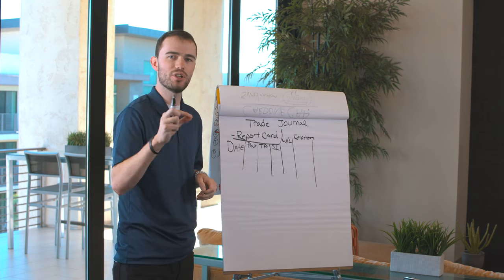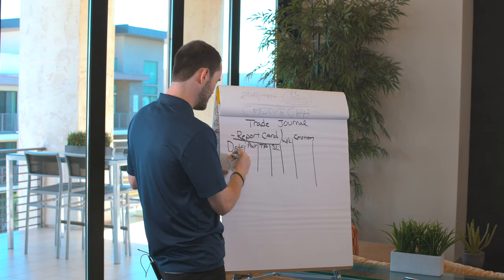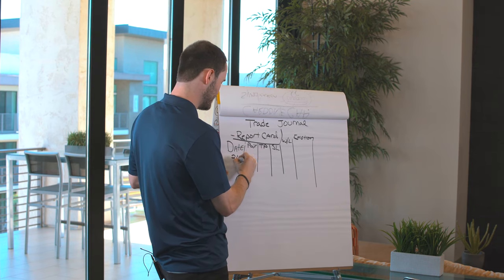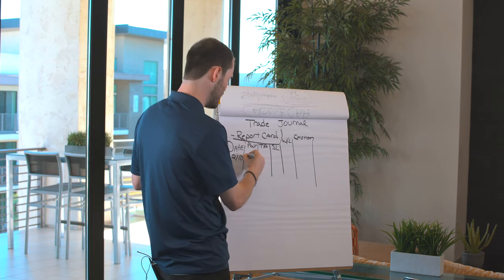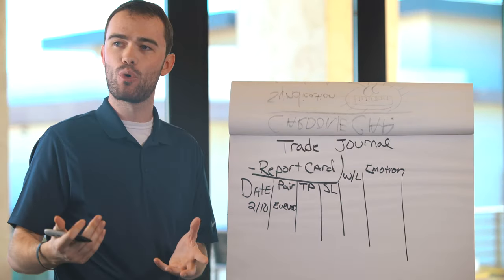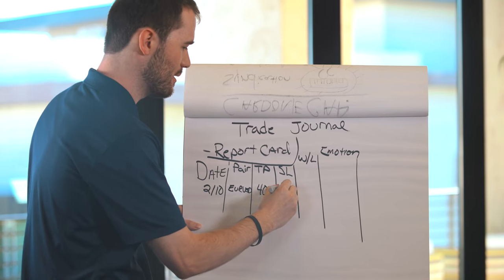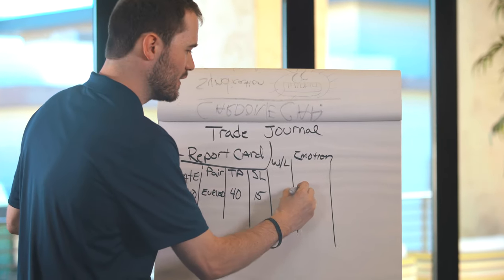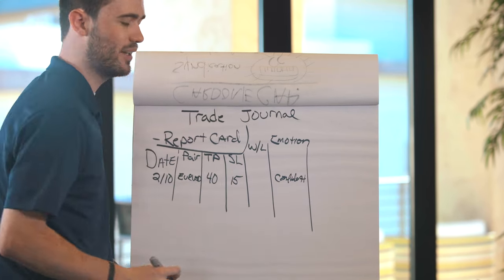So you're going to enter all the information aside from the win-loss the moment you enter the trade. So today's date that we are recording this is February 10th. So on 2-10, I enter the trade on Euro-USD. I have a 40 pip take profit, and I have a 15 pip stop loss. And I'm feeling confident with the trade.